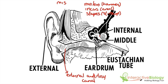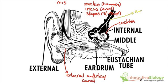Then we have this structure here that looks kind of like a snail, and that is called the cochlea. And then we have — in a different color — this structure here, and that is the auditory nerve, because it deals with hearing. And that, of course, goes to the brain.